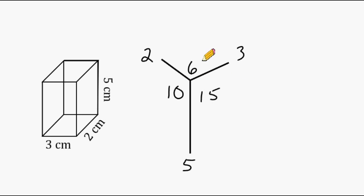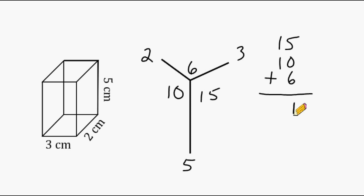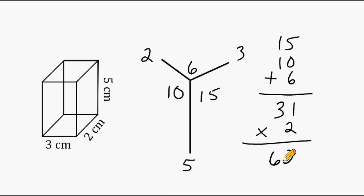These three numbers represent the areas of the front three surfaces. But remember, for each surface there is an equal or congruent surface. For example, this top surface would be 6 square units, which means the bottom surface would also be 6 square units. And we would have two rectangles with an area of 15 and two rectangles with an area of 10 square units. So we take those three numbers and add them together — this gives us the area of three of the six sides. Adding them together we get 31 square units. Because these three surfaces have a total of 31 square units, the other three rectangles also have an area of 31 square units, so we just take that number and double it. The surface area of this rectangular prism is 62 square centimeters.